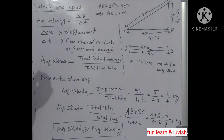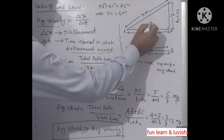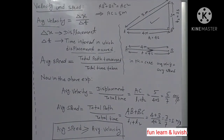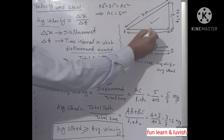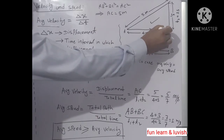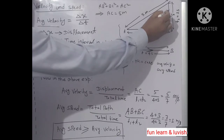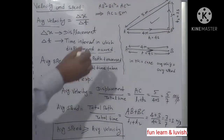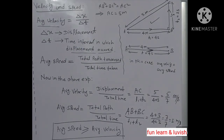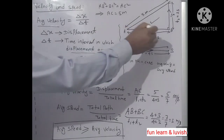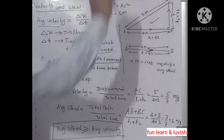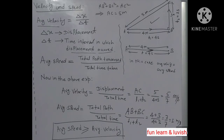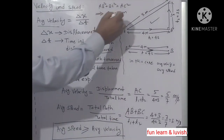We will understand this concept with the help of a right angle triangle ABC. Suppose an object started from point A and came to point B, then from point B to point C. We have to find the average velocity and average speed. The distance from A to B is 4 meters and B to C is 3 meters. Time taken from A to B is t1 = 4 seconds, and B to C is t2 = 3 seconds. In the right angle triangle, AB² + BC² = AC², so AC will be 5 meters.